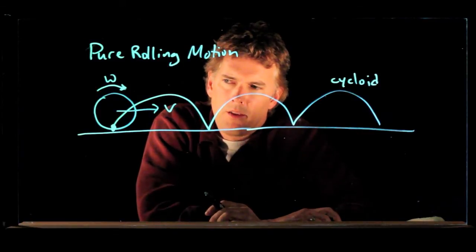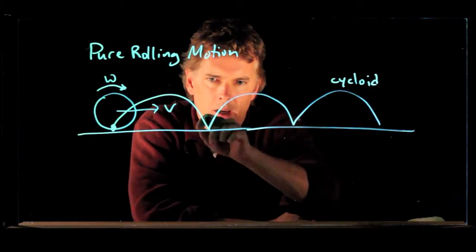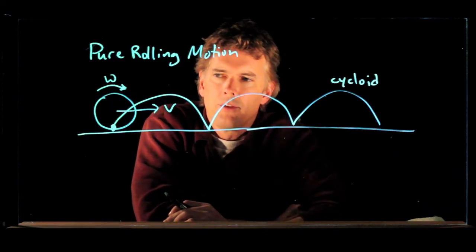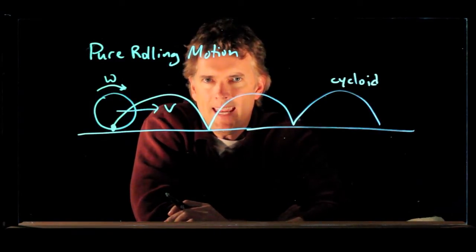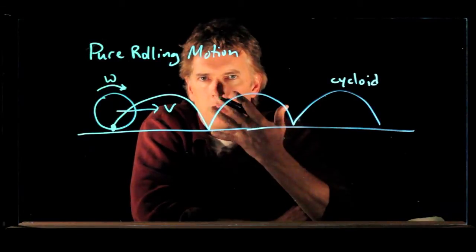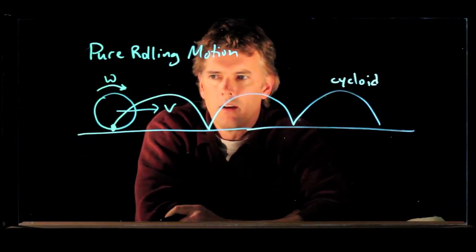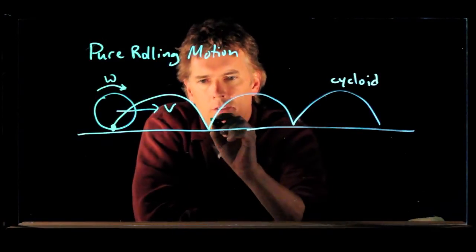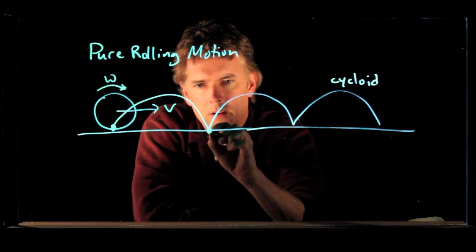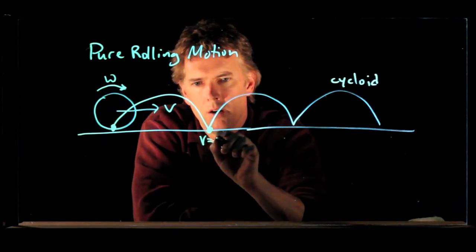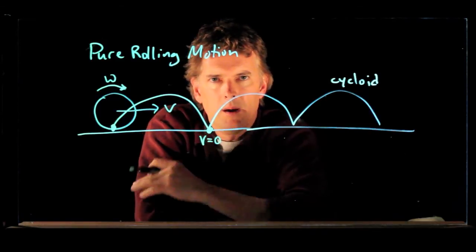And if I think about the LED going up and then back down to the ground, and I ask the question, what is the speed of the LED relative to you standing there with your camera, what would you say? Well, when it's on the ground here, the speed of that LED is zero. It's right up against the ground.